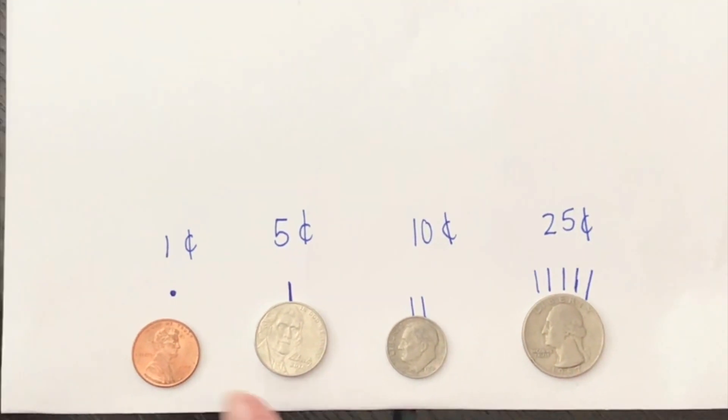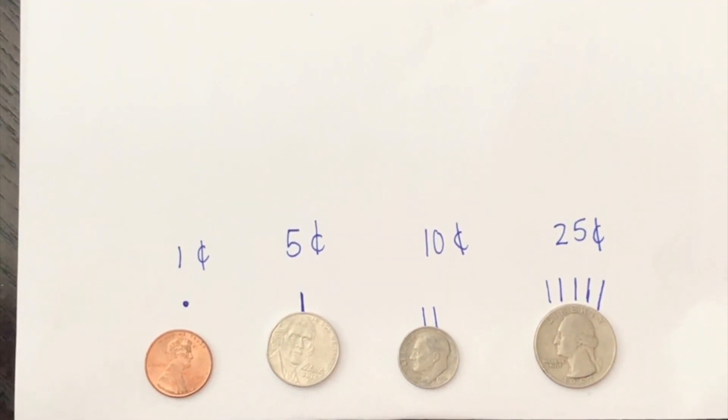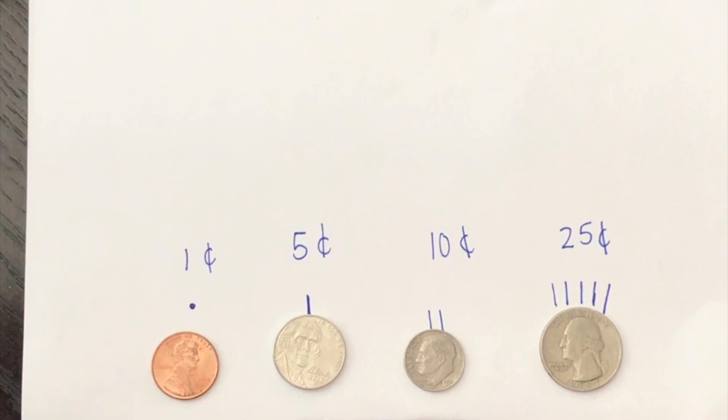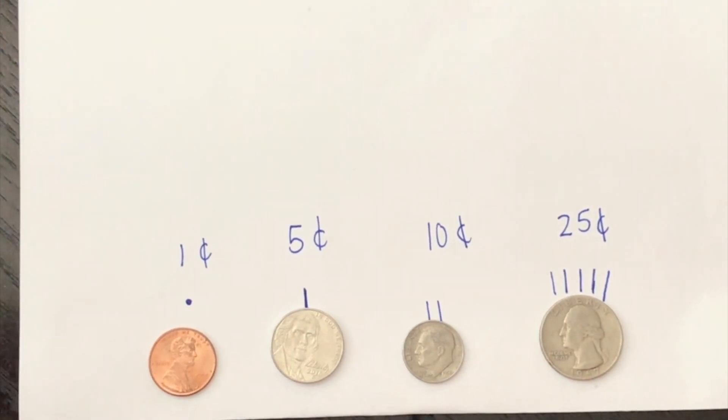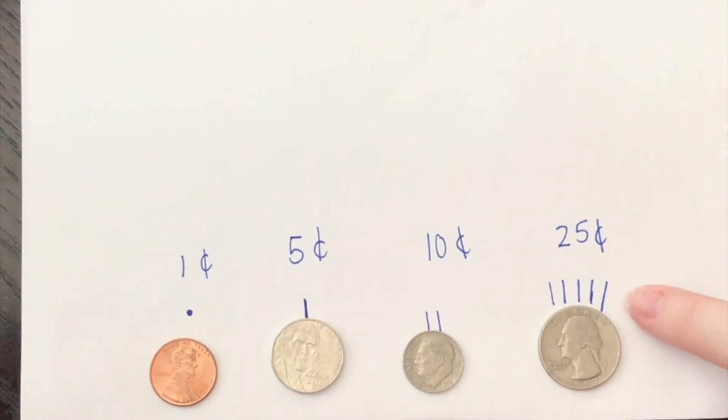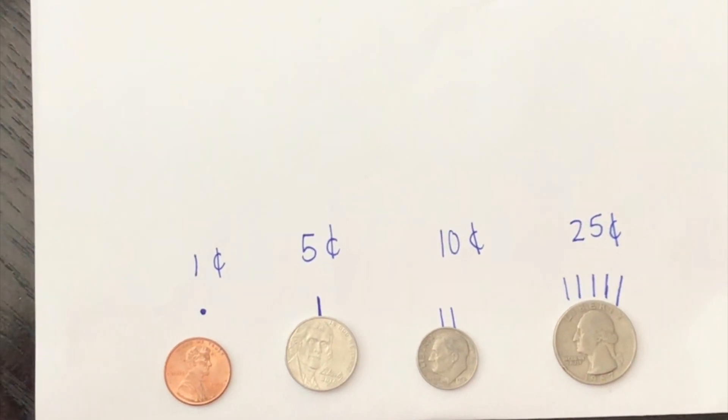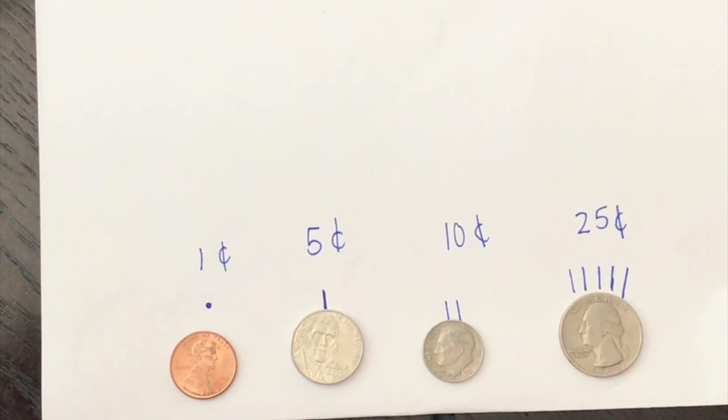So remember that a penny is worth one, a nickel is worth five, a dime is worth ten, and a quarter is twenty-five. What we can do is use these little tally marks or hairs to help us count up our coins and see how much they're worth.